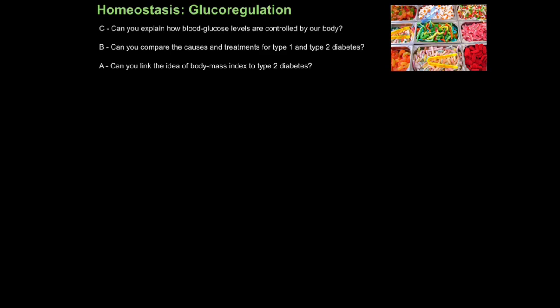This is another tutorial on homeostasis. Today we're going to look at glucoregulation, in other words, how our body regulates blood glucose levels. First, can you explain how blood glucose levels are controlled by our body? Then, can you compare the causes and treatments for type 1 and type 2 diabetes? And finally, can you link the idea of body mass index to type 2 diabetes?